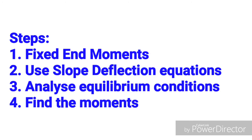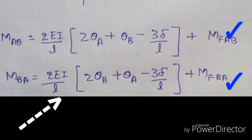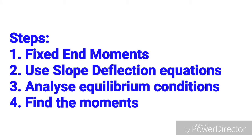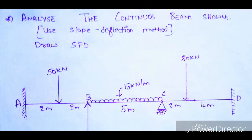Here are the steps to solve using the slope deflection equation. First, we have to find the fixed end moments. After finding the fixed end moments, we use the slope deflection equations. We will get equations in terms of θ_B and θ_C, which are unknown. Then we use the equilibrium conditions to find θ_B and θ_C, and finally calculate the moments.